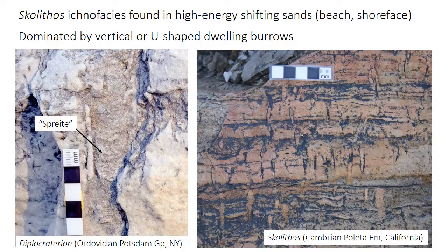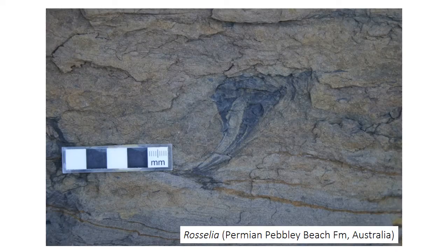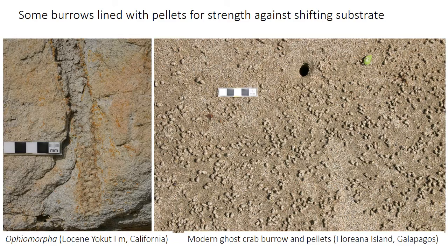There's a trace fossil called Rosselia — a vertical tube with a conical mud lining — that can be found in the Skolithos ichnofacies as well as in other environments. Because the Skolithos ichnofacies is found in unstable high-energy substrates, some burrows are lined with mucus-cemented pellets for strength. Ophiomorpha on the left is a larger-diameter, usually centimeter-scale vertical burrow, sometimes with Y-shaped branching. It's really diagnostic for its characteristic pelleted wall lining. A modern crab burrow in the photo on the right shows pellets being made to line the burrow wall.